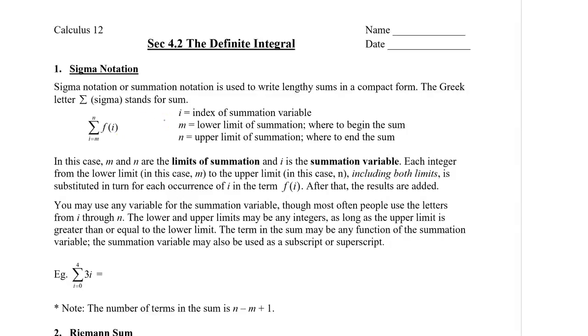So remember that you're using integers to substitute in for each variable i. Now you may use any variable for the summation variable, but most often you will see the letters i through n to be used. The lower and upper limits may be any integers, as long as the upper limit is greater than or equal to the lower limit. The term and the sum may be any function of the summation variable.